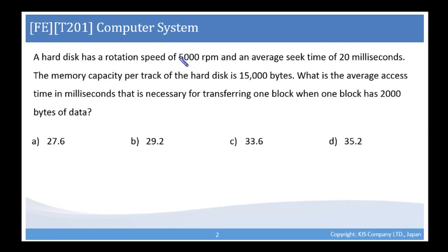A hard disk has a rotation speed of 5000 RPM or 5000 revolutions per minute, and an average seek time of 20 milliseconds. The memory capacity per track of the hard disk is 15,000 bytes.